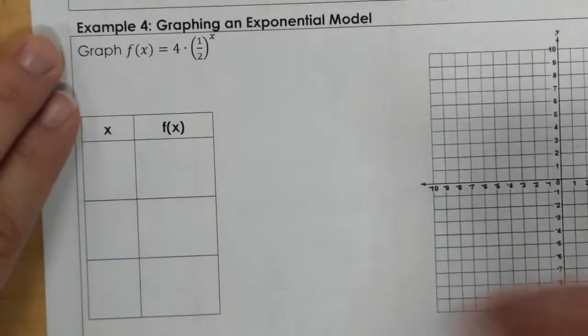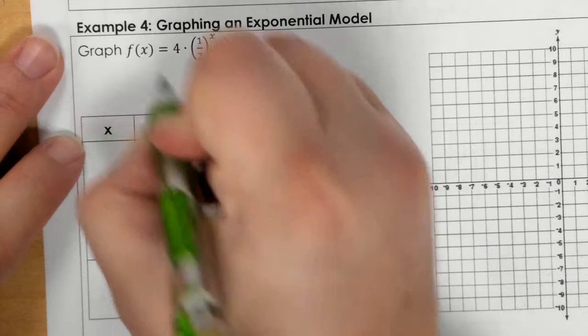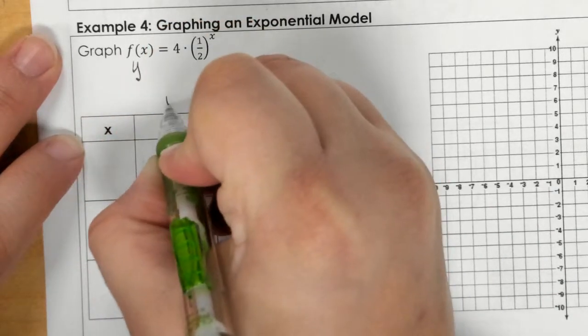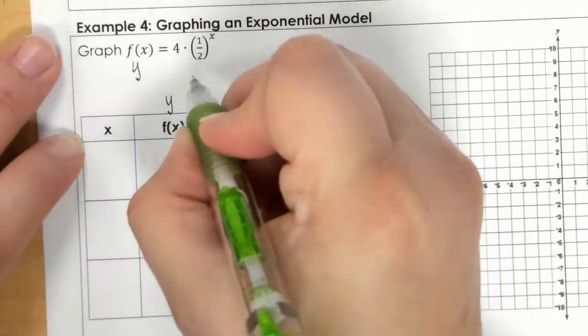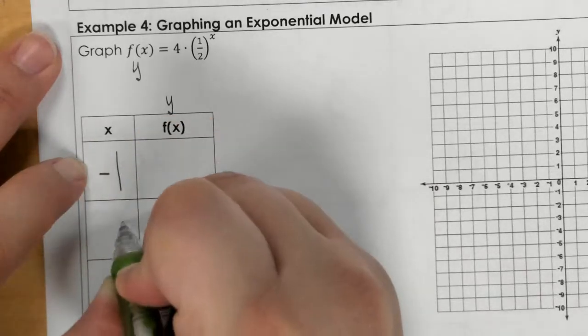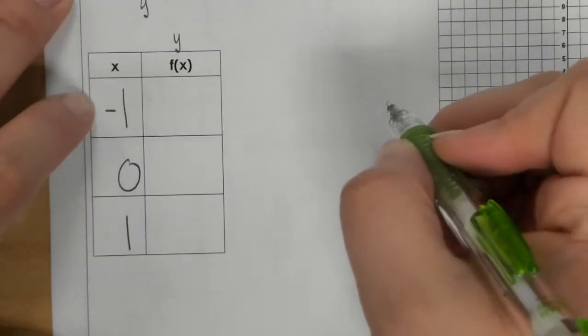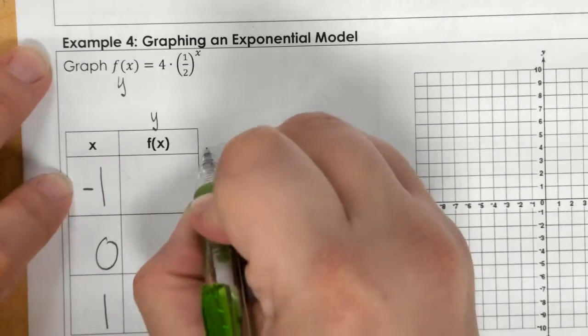For the last one, we are going to take f of x and make it y. And then we are going to use the same numbers: negative 1, 0, 1. And we are going to plug it in.